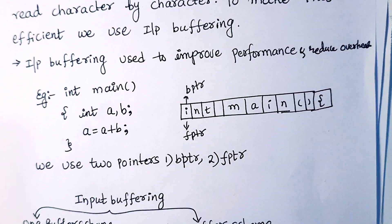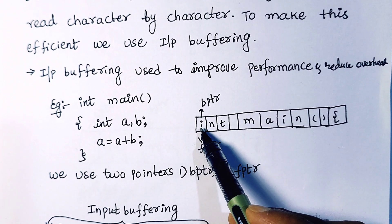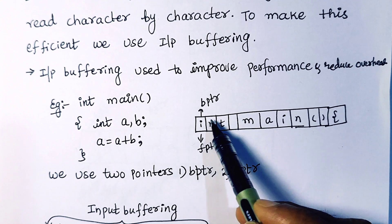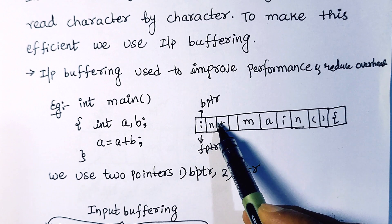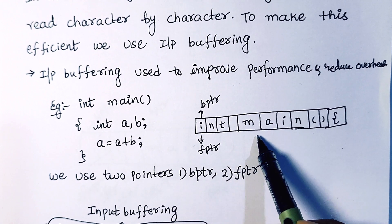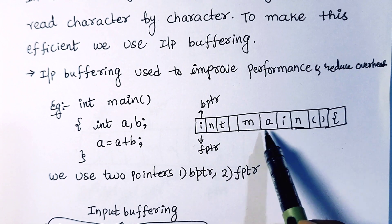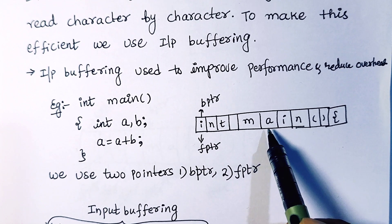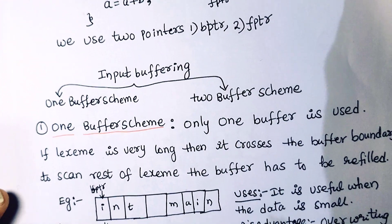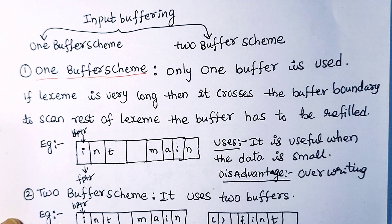Let me explain again what happens in input buffering. The value of bptr and fptr is initially the same. Over time, the forward pointer moves forward. When it finds a space, it recognizes 'int' as a lexeme or keyword. Then the value of bptr and fptr comes to the next token. When the forward pointer reaches 'main', it stores that in the symbol table. This is a very important concept and this question will come in examinations.